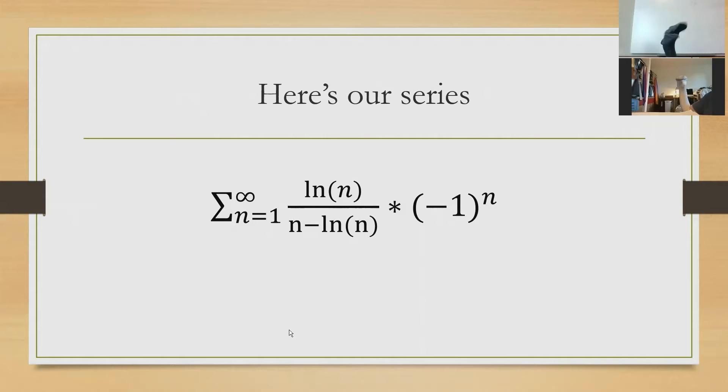So in a normal testing situation, you would want to do the absolute series test, or test the absolute value using one of our tests and see if that converges. If that converges, it converges absolutely. But for this, let's go ahead and just start with the alternating series test to see if it converges conditionally first.